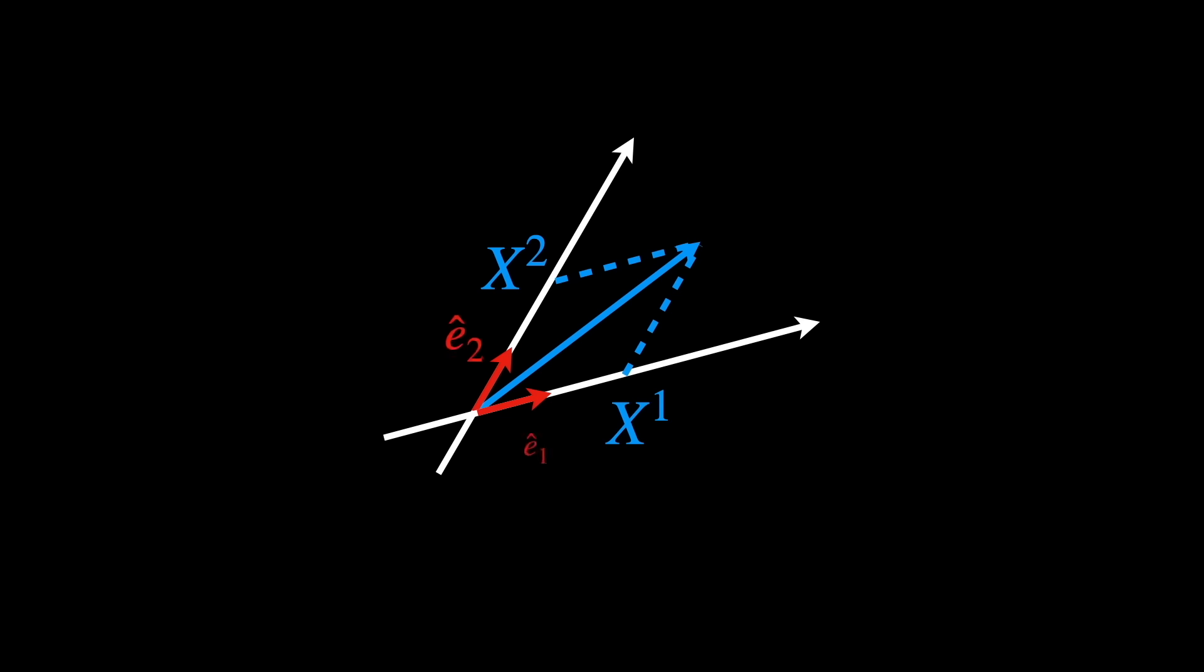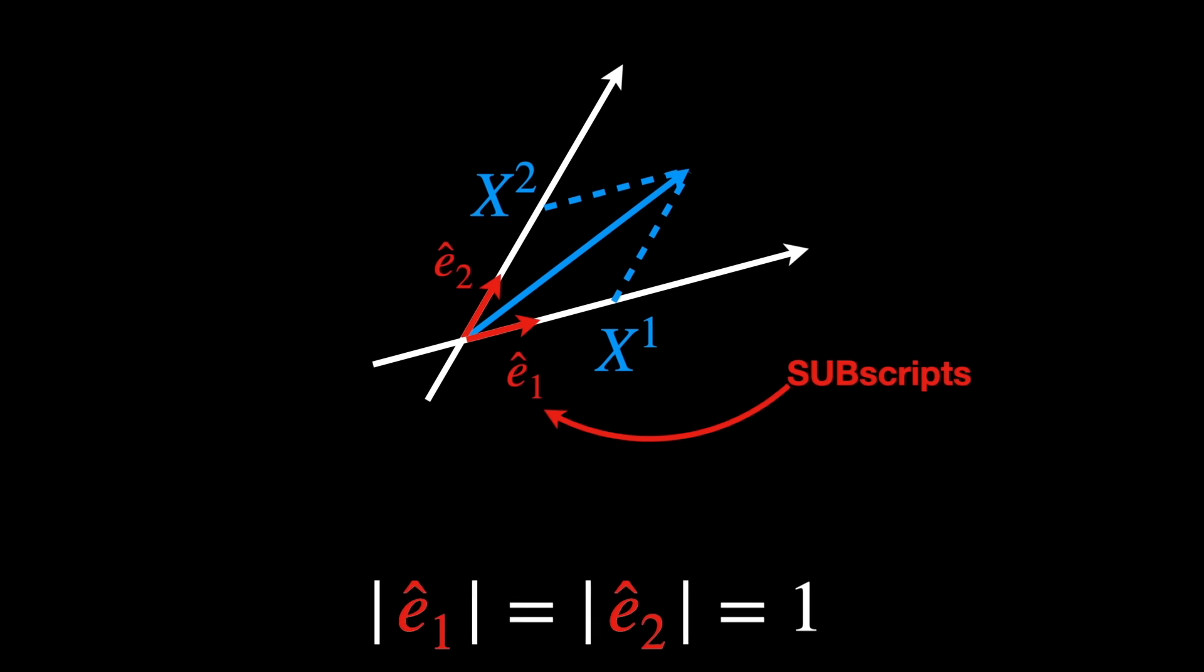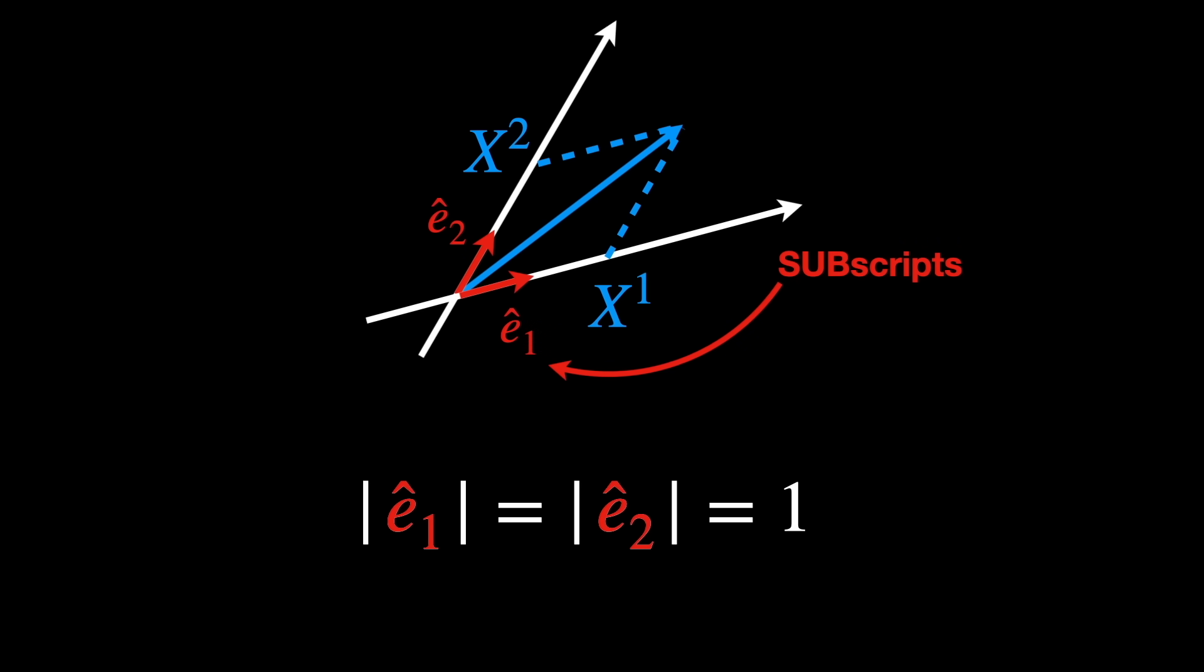The question is, is there an alternative basis such that a linear combination of the elements of this new basis with perpendicular projections allows us to express the vector x? The answer is yes, and it's called the dual basis. Our original basis, defined by parallel projections, is usually denoted with ê₁ and ê₂, which are subscripts, such that the little hats indicate that these are unit vectors, so their lengths are 1, and it's called the contravariant basis.